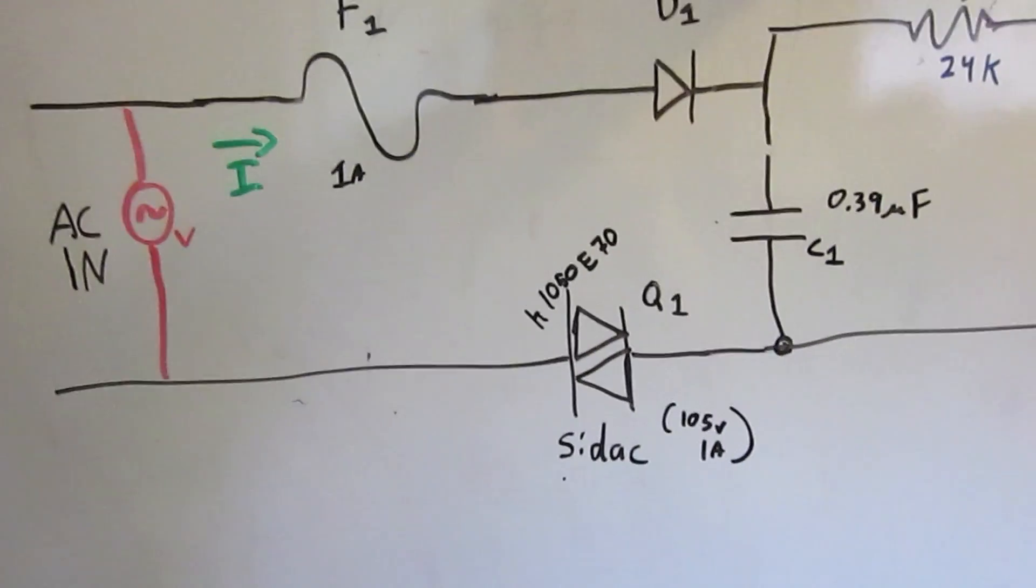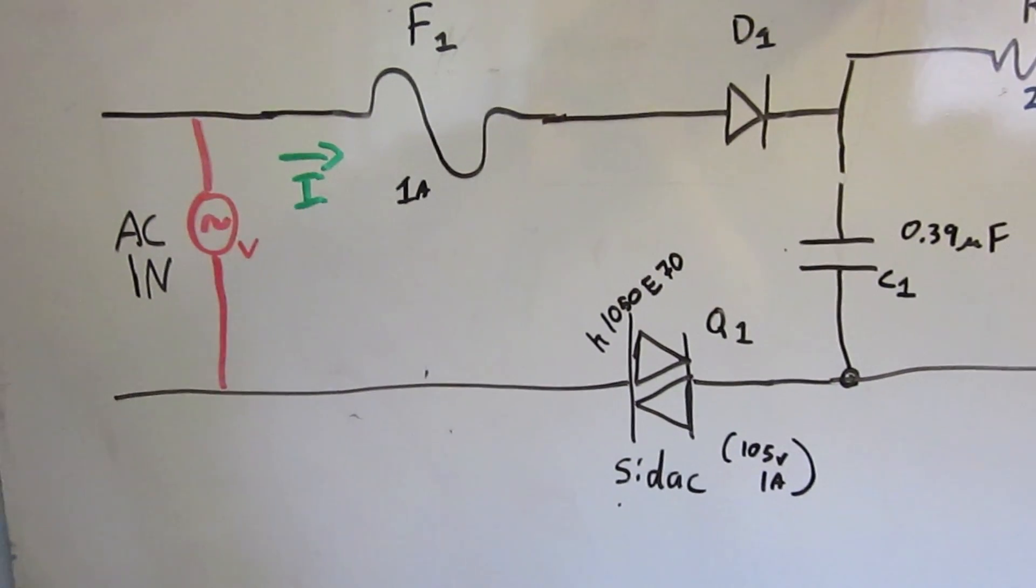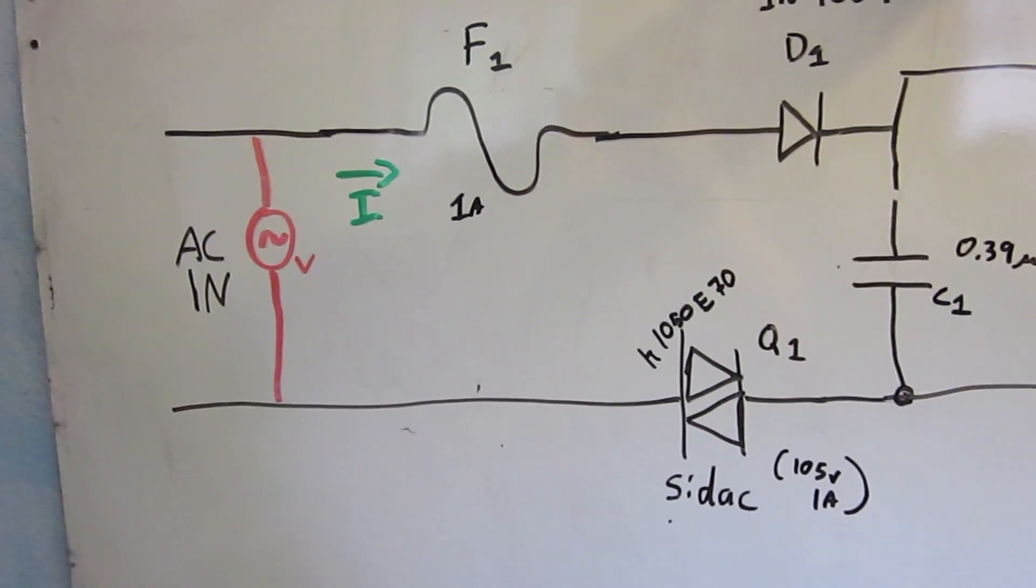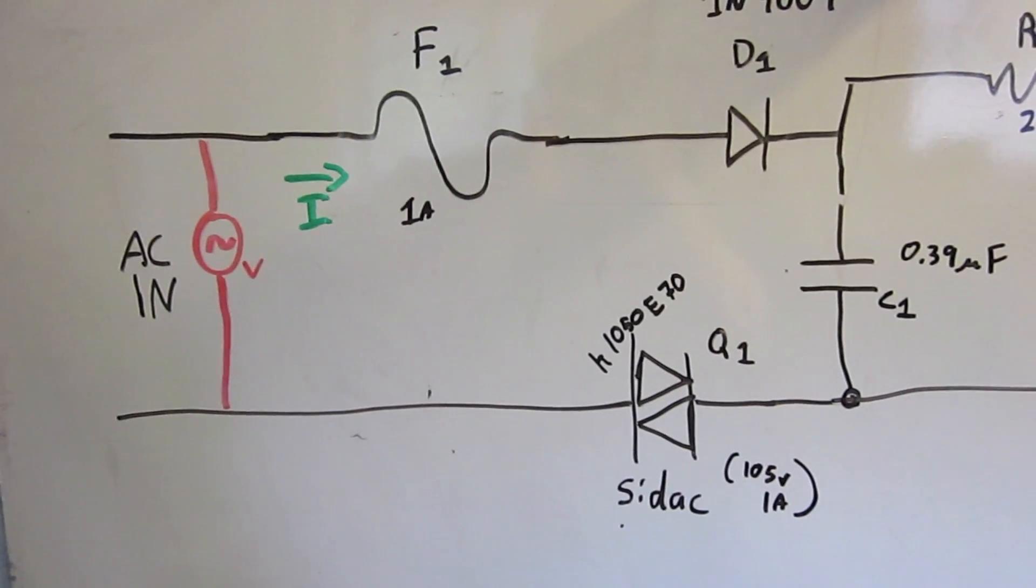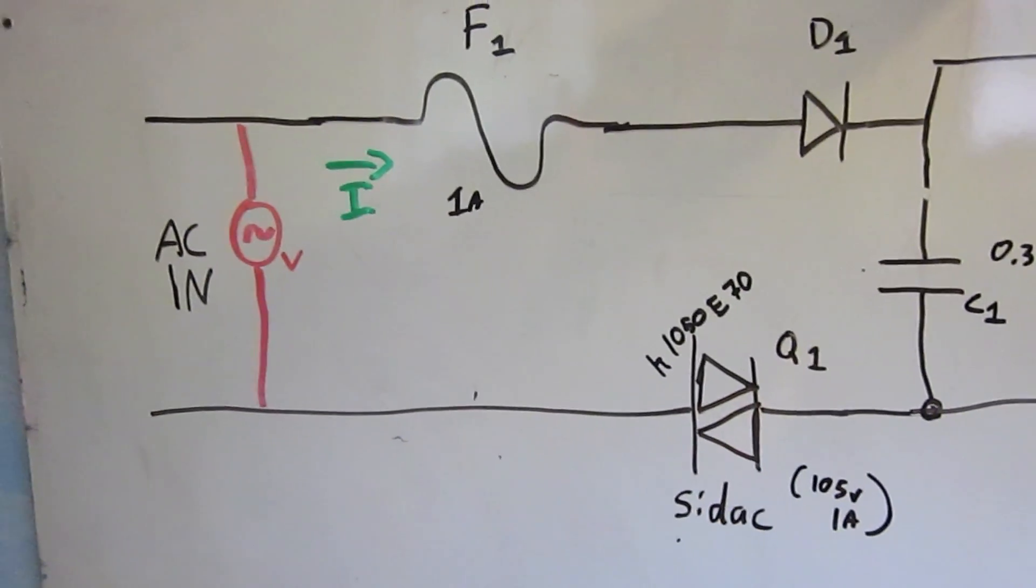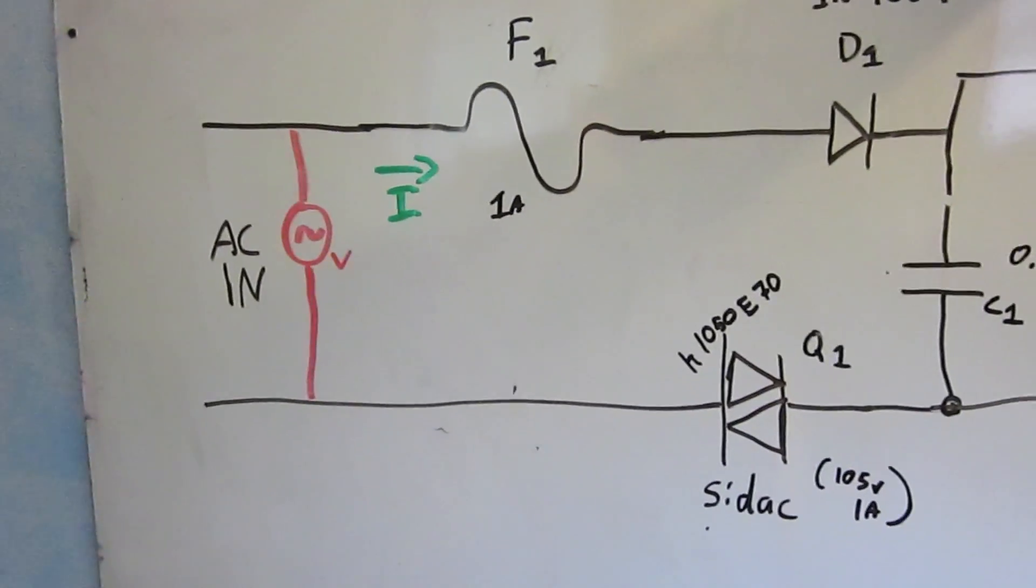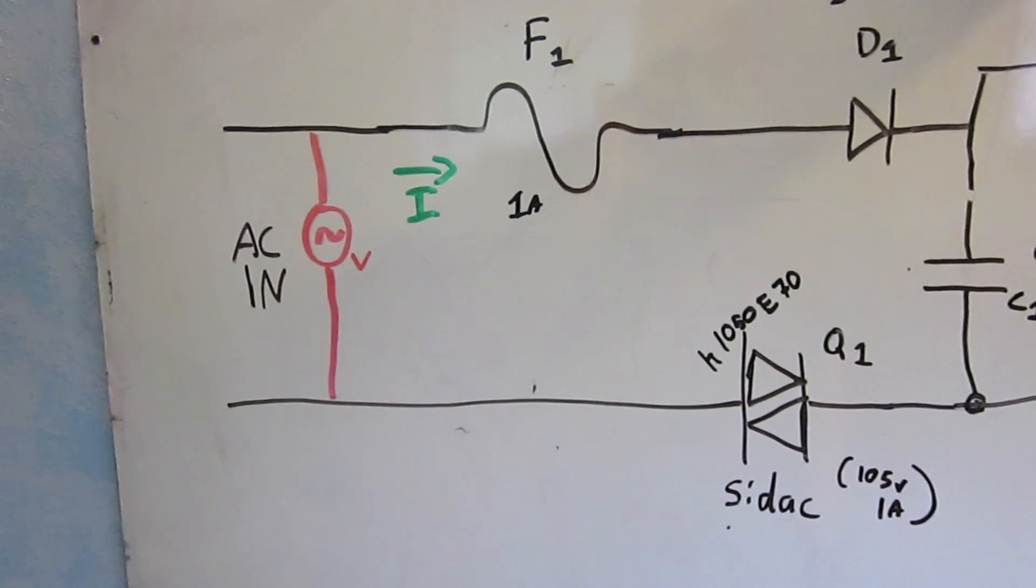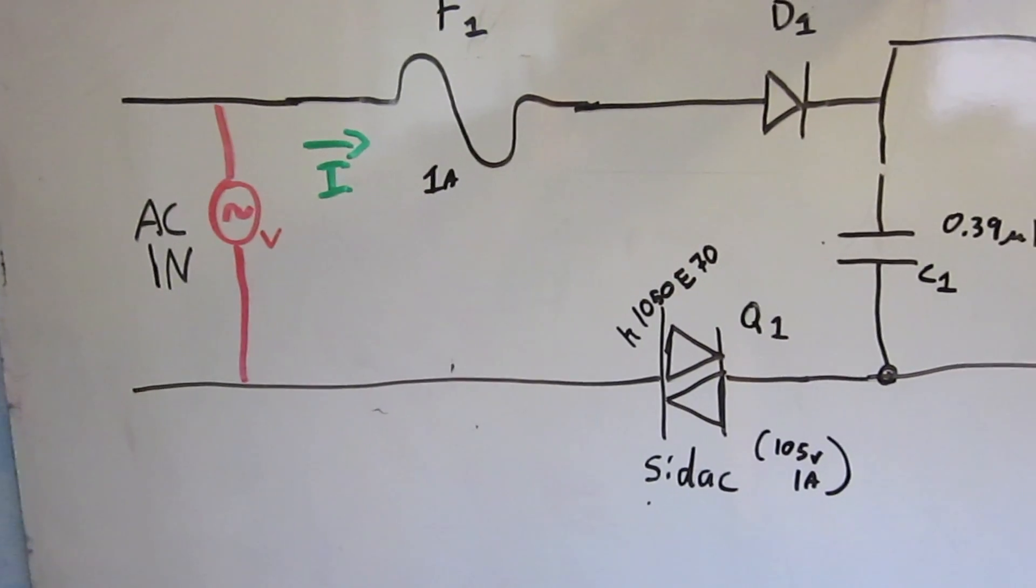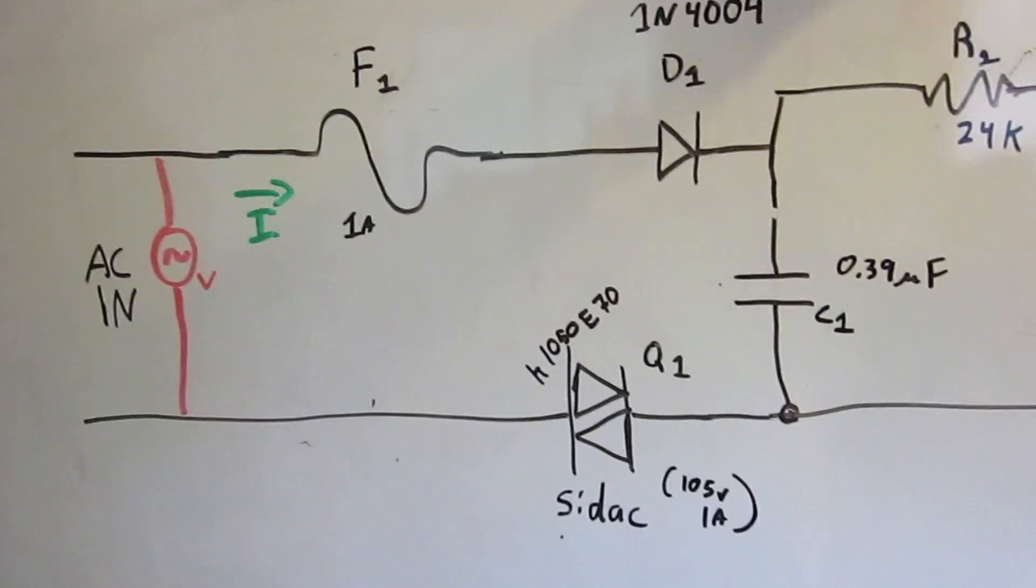With essentially zero resistance. The resistance, I suspect that the resistance across the SIDAC combined with the resistance of the fuse are pretty much the only things that limit the current. In this case, I measured approximately a 50 amp pulse. I suspect it could go higher if we were to plug it in right next to the breaker box where we get the lowest impedance. But I think about 50 amps is what we're getting.